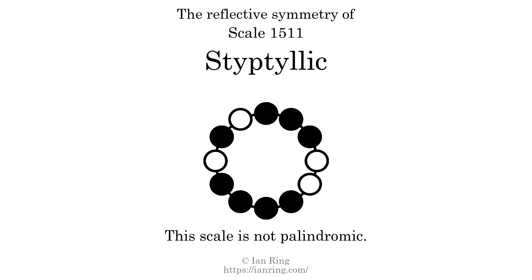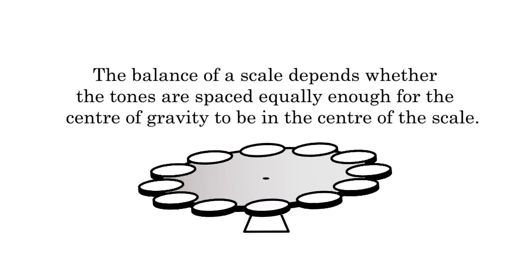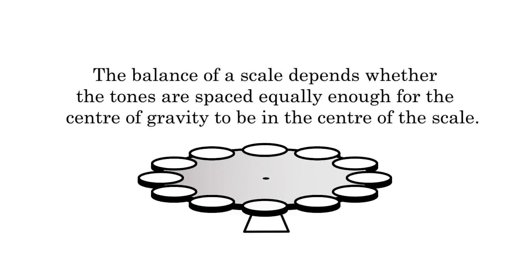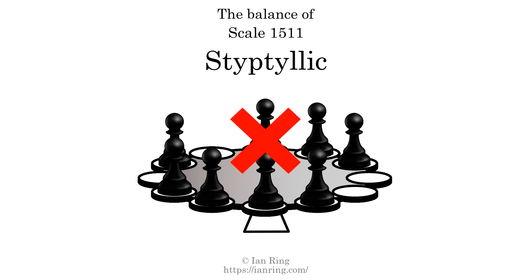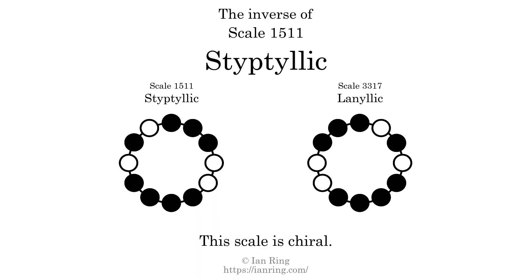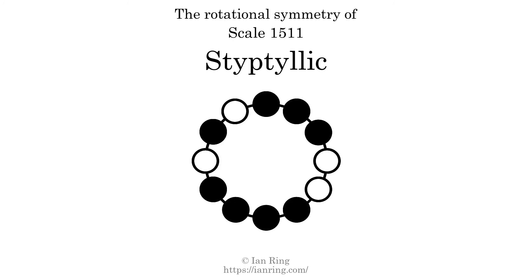This scale has no reflective symmetry. This scale has a different pattern of intervals ascending and descending, so it is not palindromic. This scale has no ridge tones. The balance of a scale depends on whether the tones are spaced equally enough for the center of gravity to be in the center of the scale. This scale is not balanced. The inverse of this scale is scale 3317, also known as Lanulic. This scale is chiral — it cannot transform into its inverse by rotational transformation. This scale has no rotational symmetry.